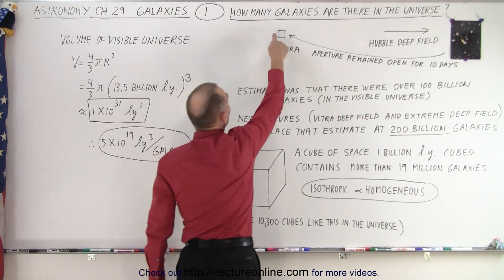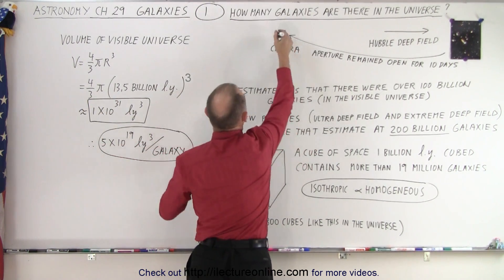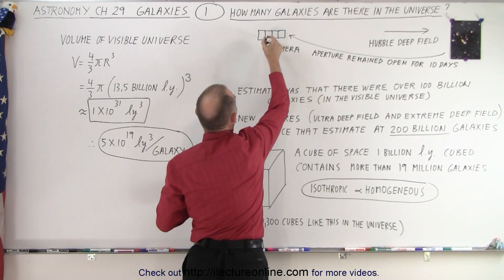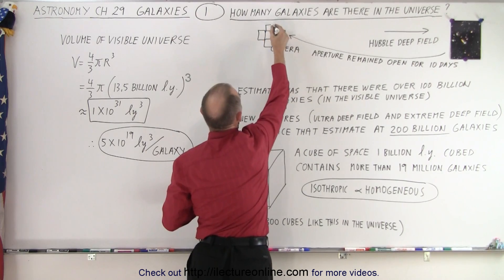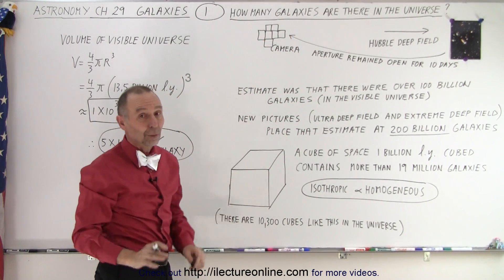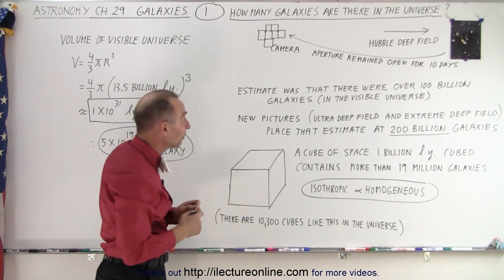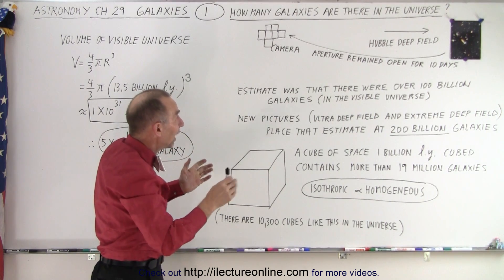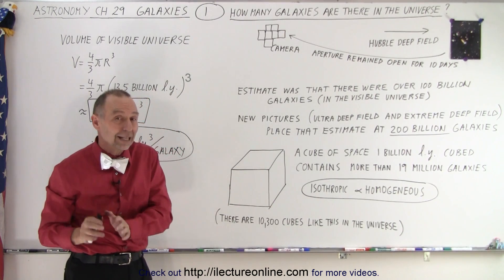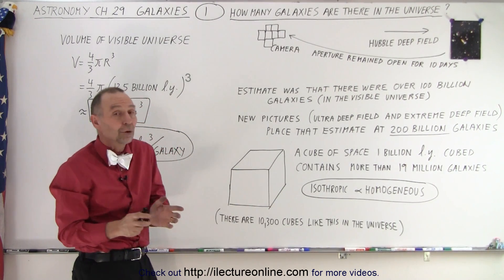And then of course, if you did it again right next to it so you took another picture right here kept the lens open for 10 days and did it again and again and kept doing that all around us. Of course, that would take an incredible amount of time but if you could and you add them all up the estimate was that there had to be at least 100 billion galaxies in the universe.